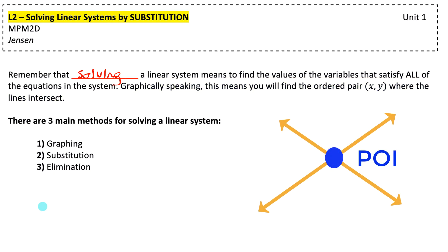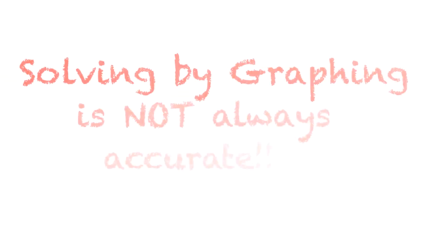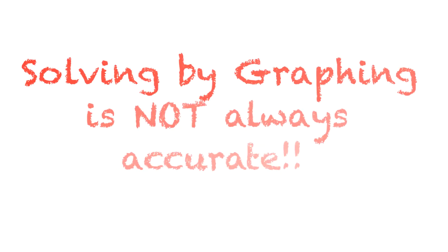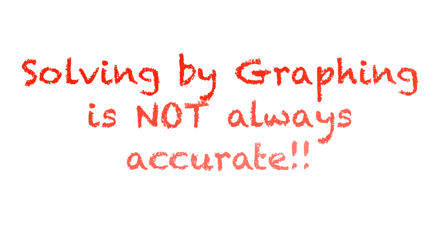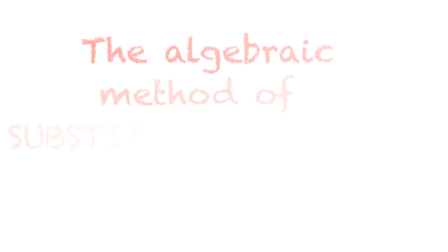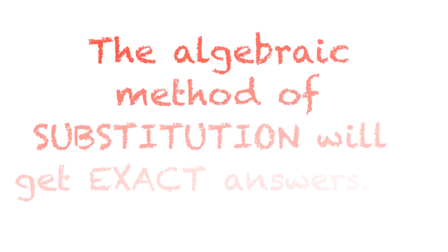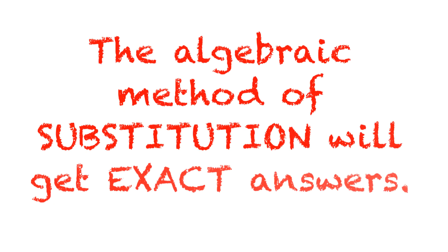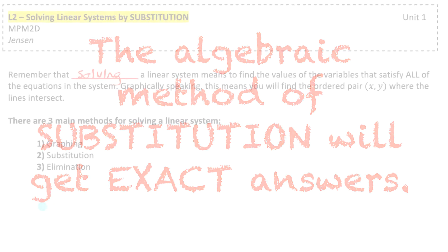In the first lesson of this unit, we learned how to do that graphically, but sometimes we had to estimate the solutions. So in this lesson, we're going to learn an algebraic method called substitution, where we'll make sure we get exact answers for each linear system.